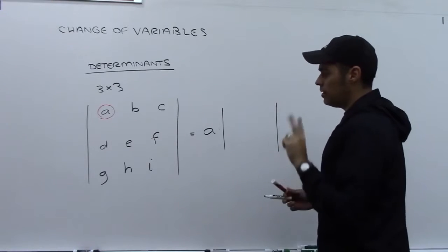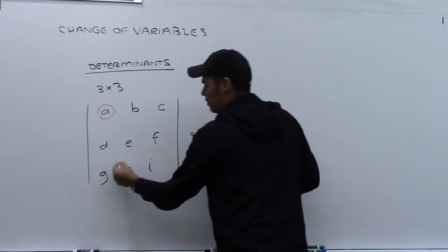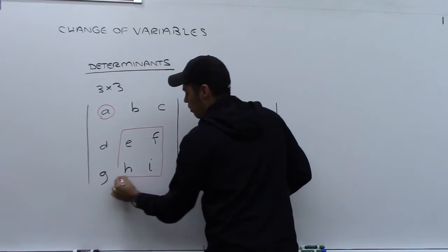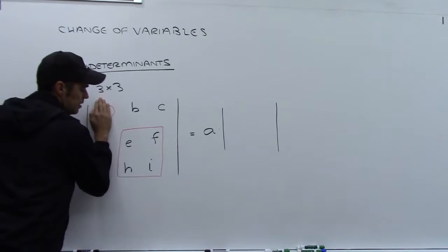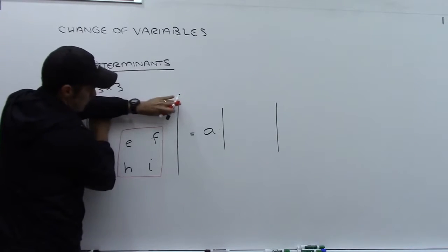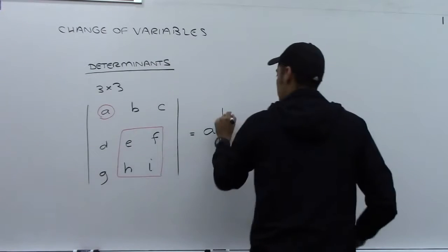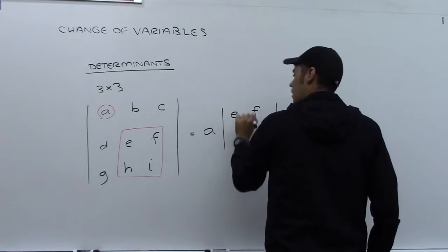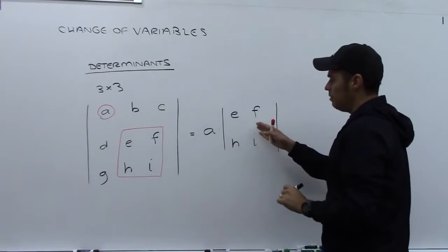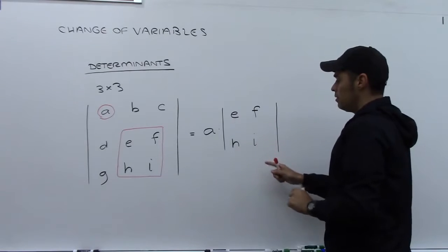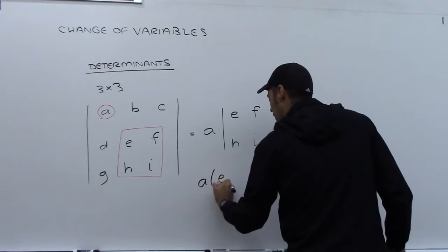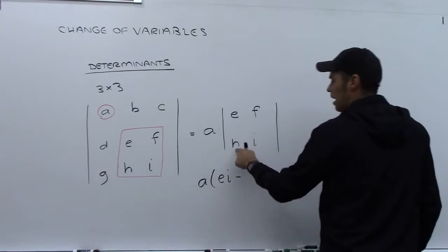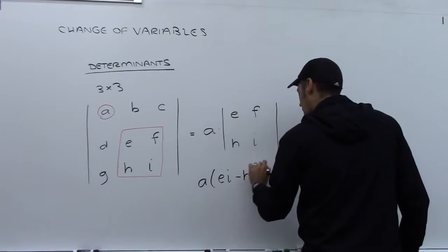This determinant is a determinant of a 2×2 matrix created from those four numbers. One way to imagine it is that we start with A, cover up this column, cover up this row, and we get EFHI. That's the determinant we need here — so this becomes A times (EI minus HF).